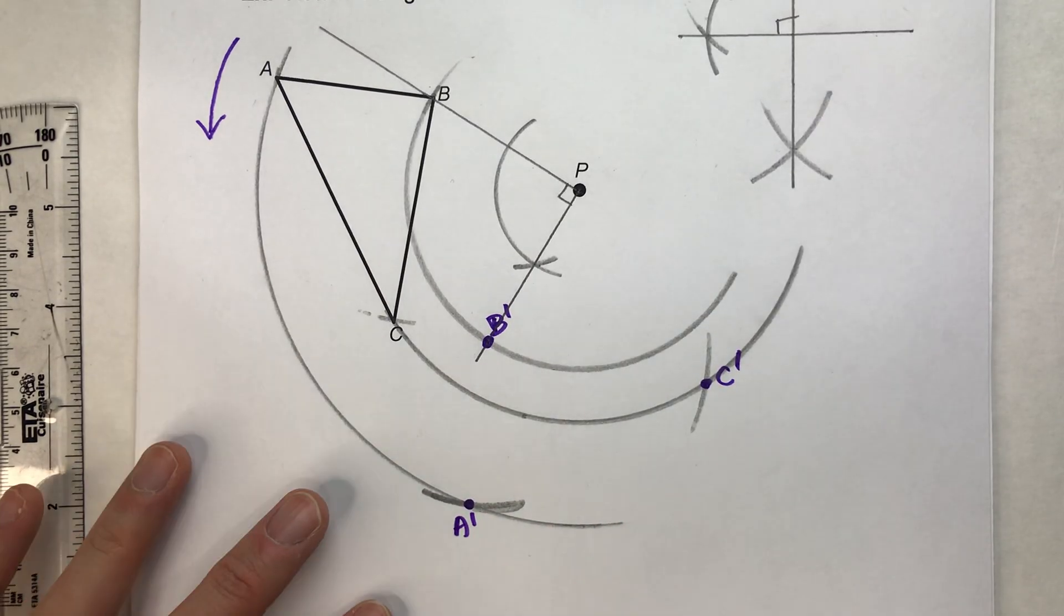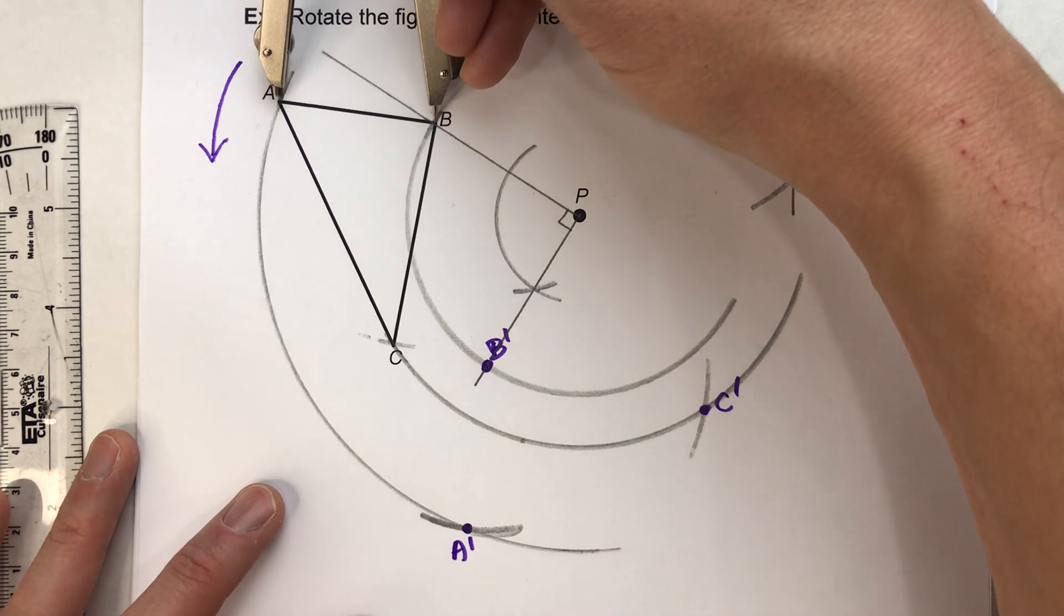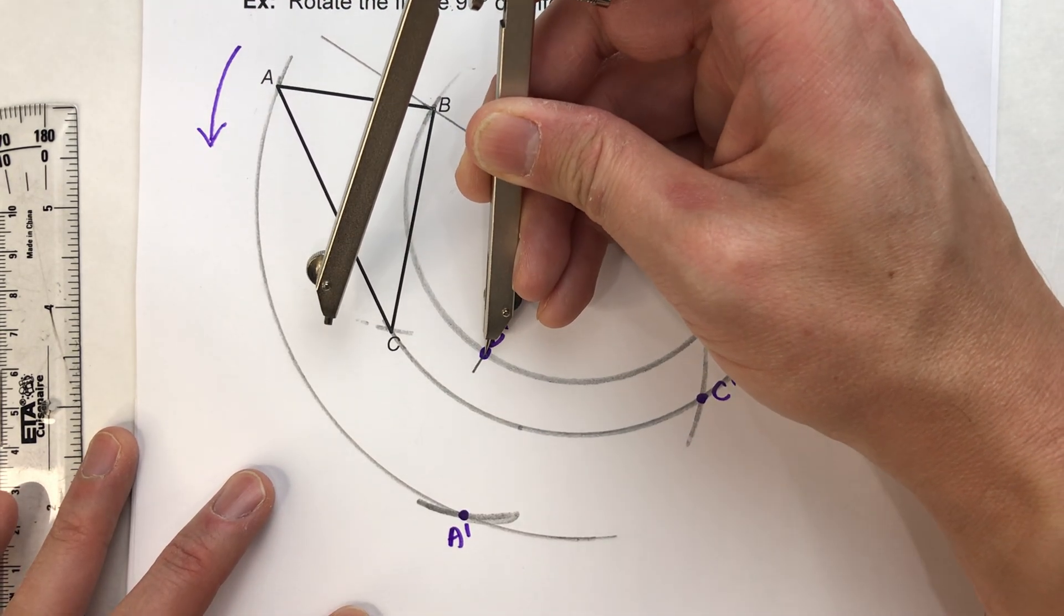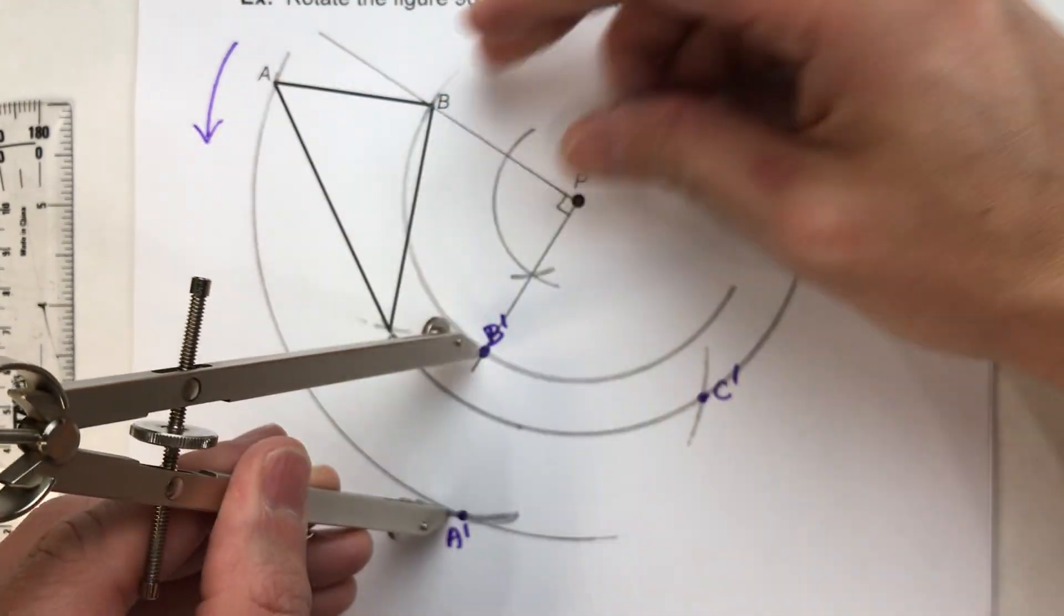What can be a little confusing though, I will say, is see this distance from B to A? Technically, when we go off of B prime, this arc is actually going to hit the path of A in two different spots. It's going to hit down here.